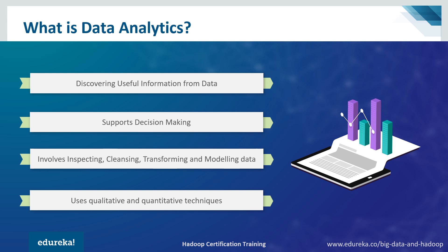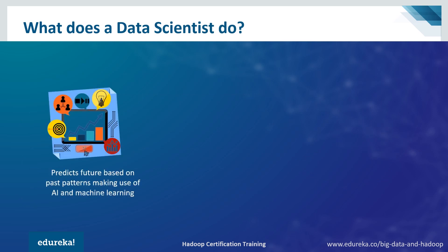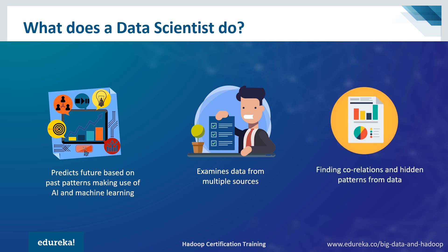Now let's take a look at the responsibilities of the different professionals working in these three fields. First, what does a data scientist do? They perform analysis to discover insights from data. They use various advanced machine learning algorithms to identify the occurrence of a particular event in the future, predicting the future based on past patterns using artificial intelligence and machine learning. They examine data from multiple datasets, identify new business questions that can add value, and find hidden patterns, correlations, market trends, and other useful business information.